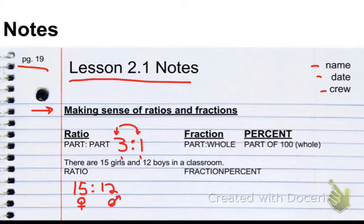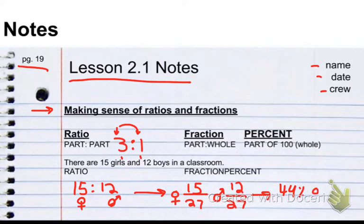Now, if I were to turn that into a fraction, I could make two different fractions. The fraction of the class that is girls would be 15 over 27, and the fraction of boys would be 12 over 27. And if I were to make those into percents, then I would get a decent percent of around 44% boys and about 56% girls.